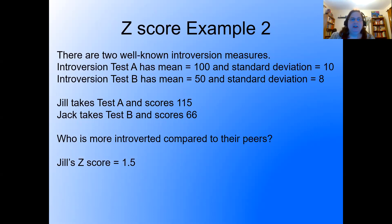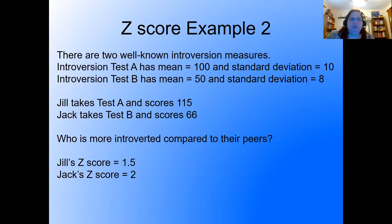Let's talk through the solution. Jill's z-score: 115 minus 100 equals 15, divided by 10, giving 1.5. Jack's z-score: 66 minus 50 equals 16, divided by 8, giving 2. Jack's z-score is higher than Jill's z-score, so Jack is more introverted compared to his peers than Jill is compared to hers.